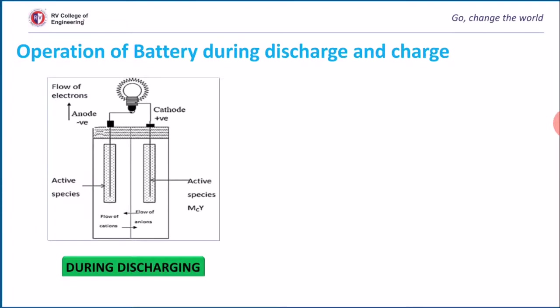The materials stored in the cell which take part in a spontaneous reaction are called electro-active materials. Only selective materials which undergo reaction are called electro-active materials. During the course of reaction, these electro-active materials are converted to electro-inactive materials. As you can see in the diagram, there is movement of electrons from anode to cathode. During discharging, the EMF of the cell gradually decreases.